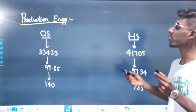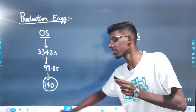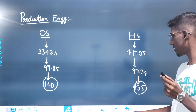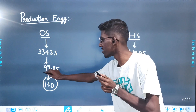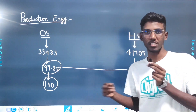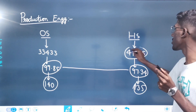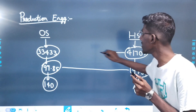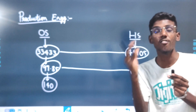Next is Production Engineering. In this case, we have 140 marks in other states and 135 marks in the home state. The percentiles are 97.34 and 97.85. That gives 41,000 rank for homestate and 33,000 rank for other states — a difference of about 800 rank. The home state advantage is very important here.